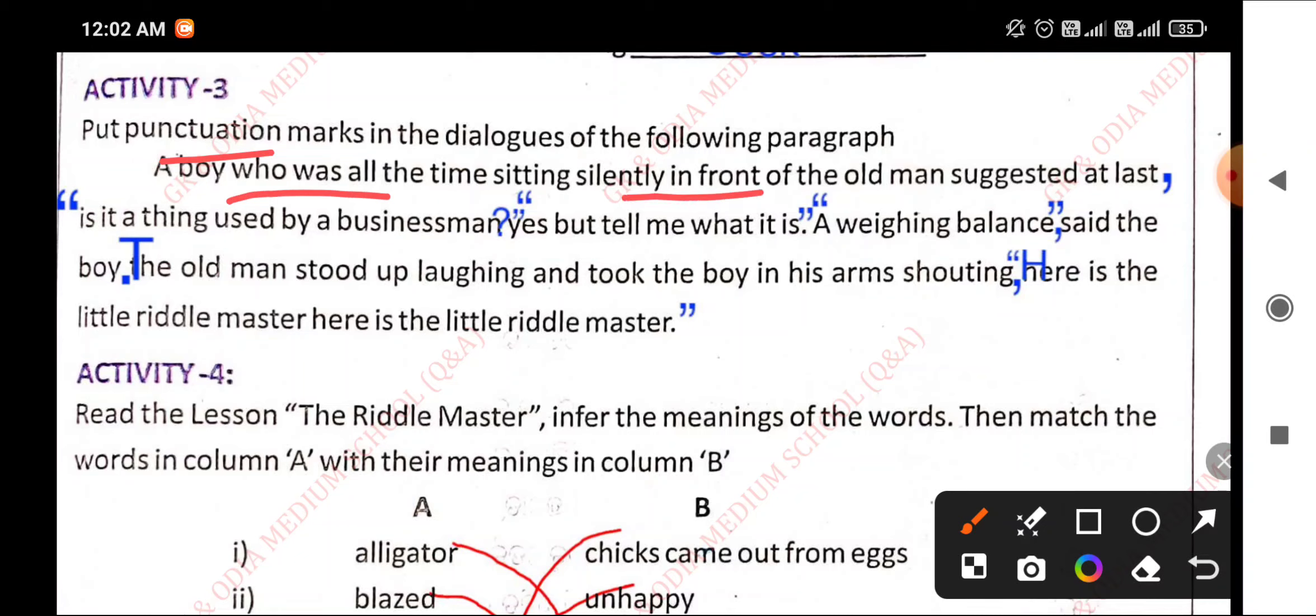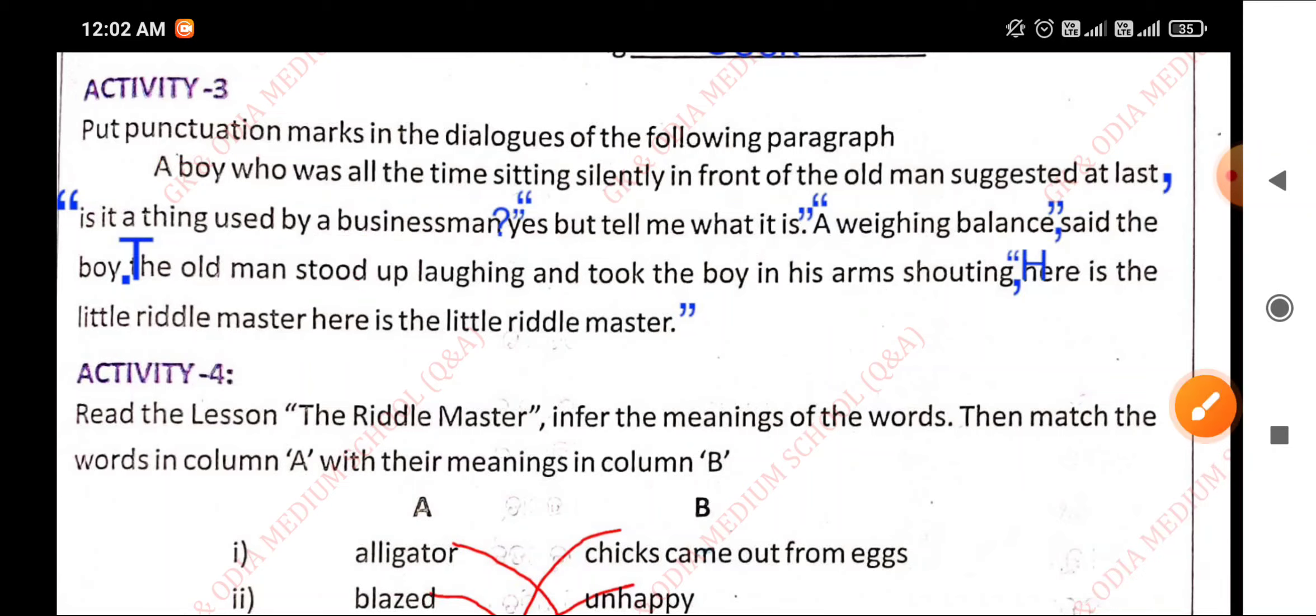A boy who was all the time sitting silently in front of the old man suggested at last: It is a thing used by businessman. Yes, but tell me what it is. A weighing balance, said the boy. The old man stood up laughing and took the boy in his arms shouting, Here is the little riddle master, here is the little riddle master.